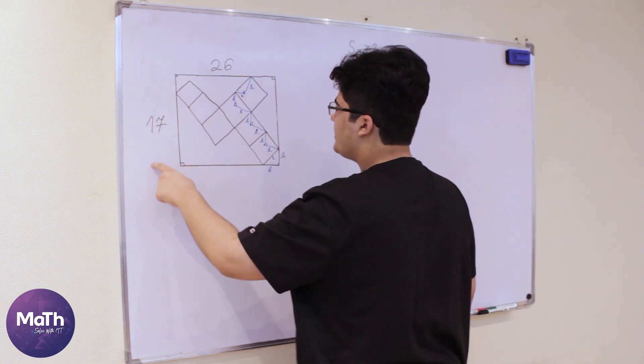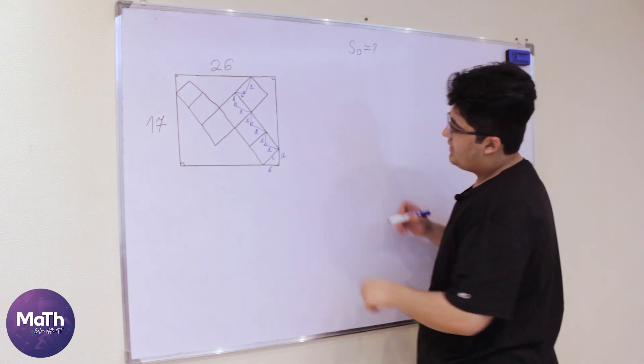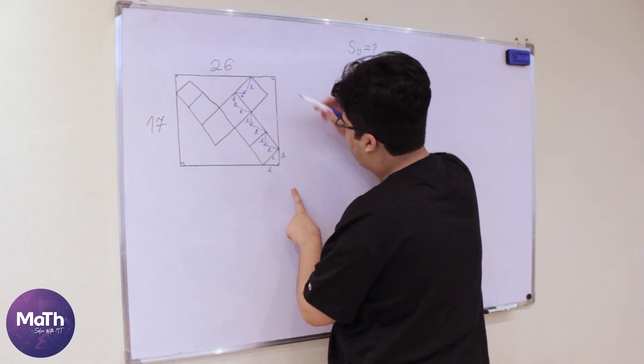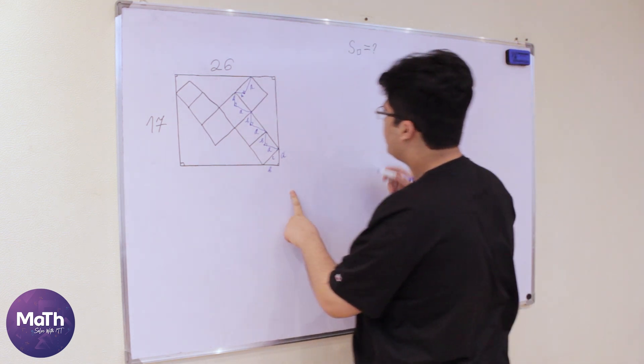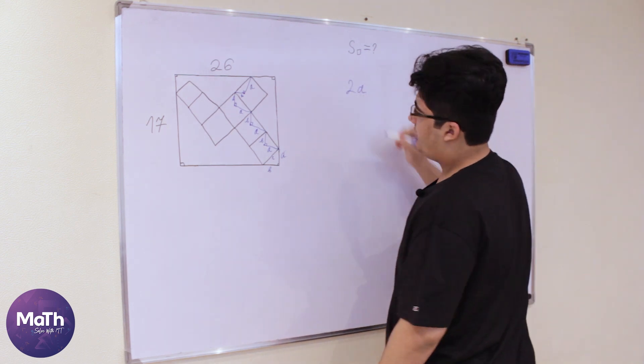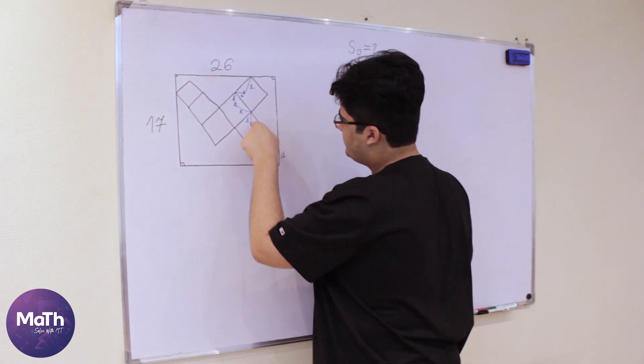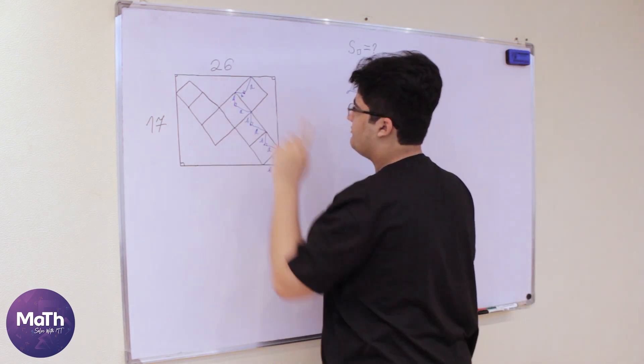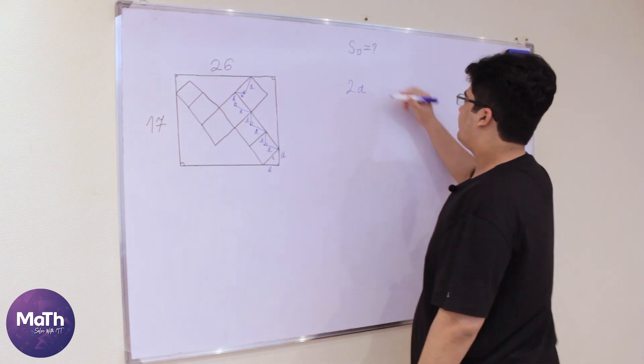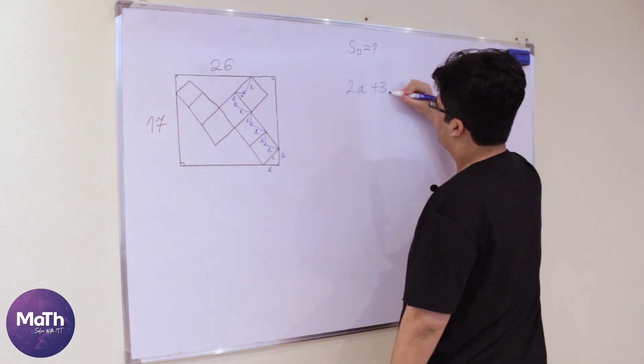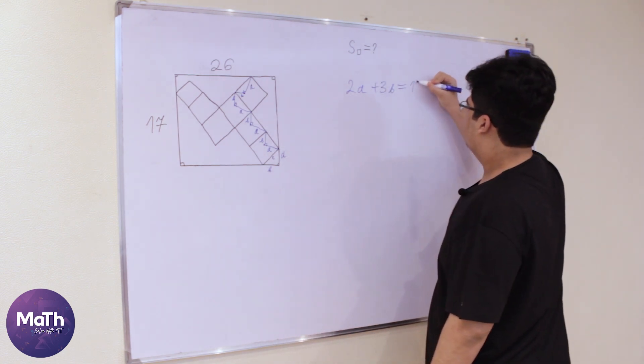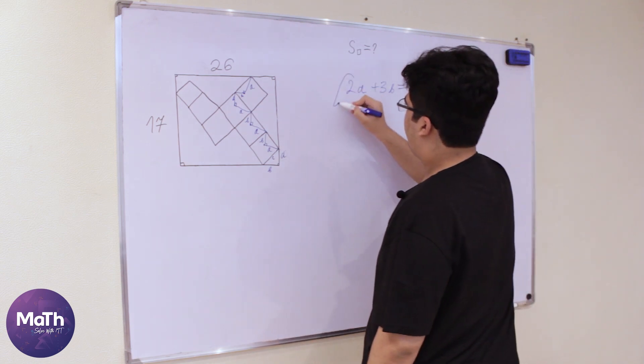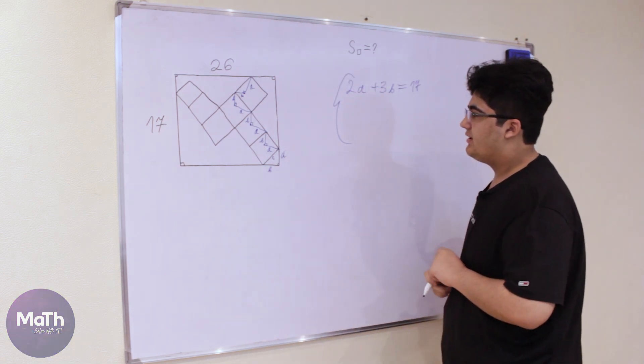To measure 17 we need one a and three b, so plus three b this will be equal to 17. This will be equal to 17 and we have system of equations because then we can actually construct another right triangle.